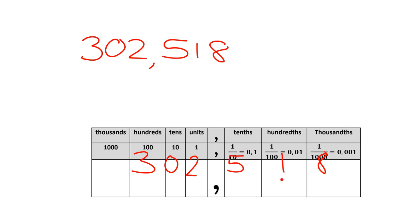This one in this place tells us we've got one hundredth and what is a hundredth? It's one over a hundred which is zero comma zero one. And this little eight is eight thousandths and a thousandth is one over a thousand which is zero comma zero zero one. So again it's just extending our place value.